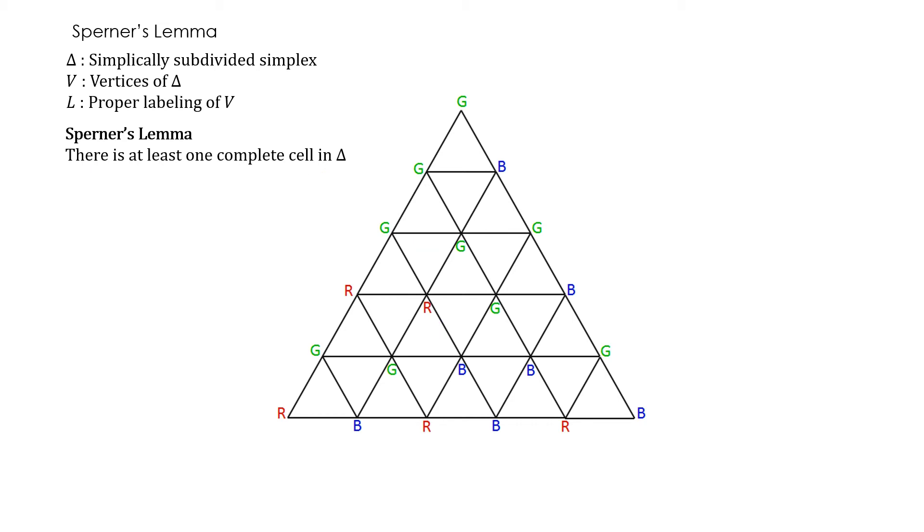But let's try to formally prove that there is at least one RGB triangle as long as the vertices are labeled and the labeling is proper. That's Sperner's lemma in two dimensions.